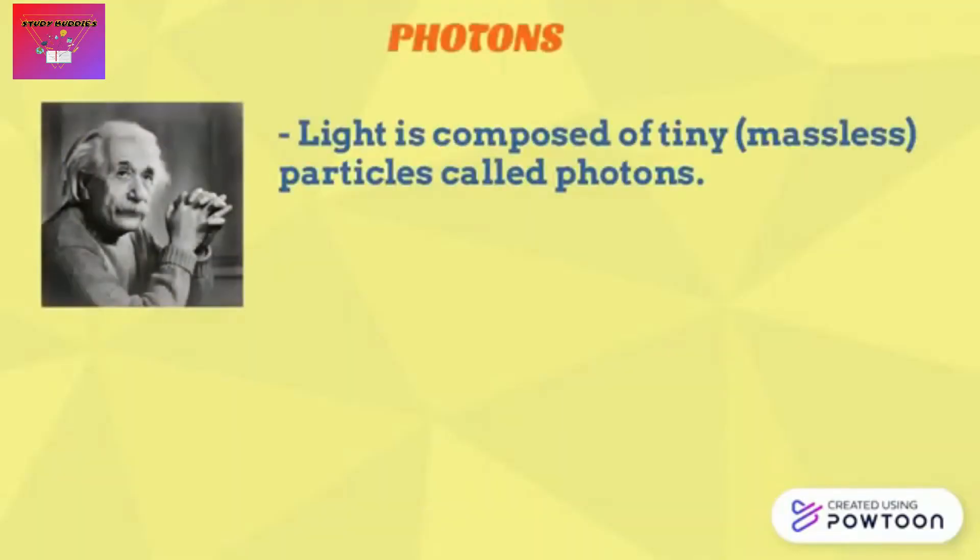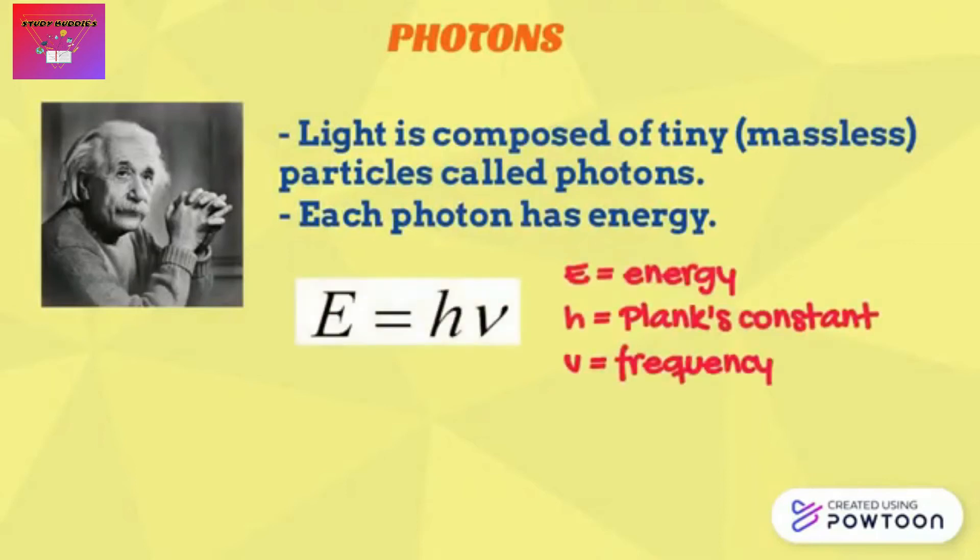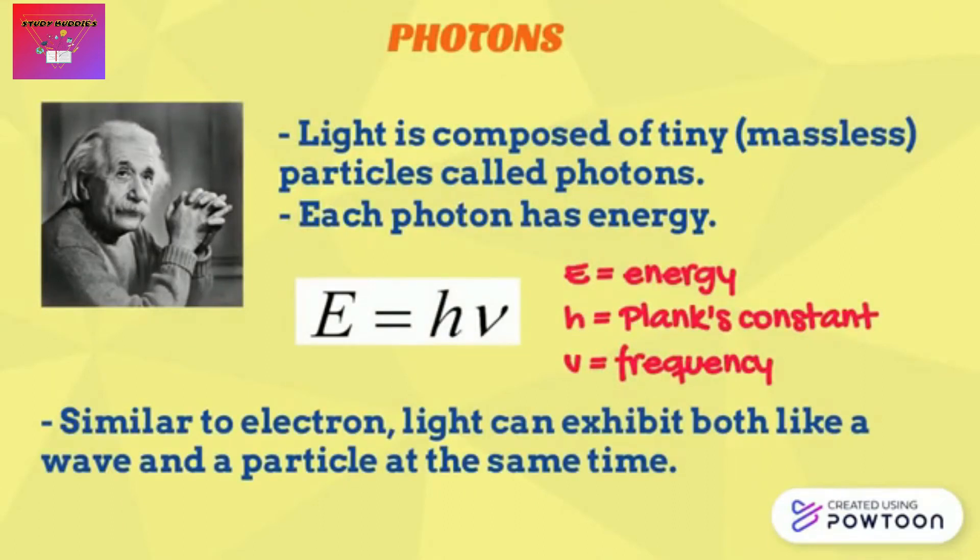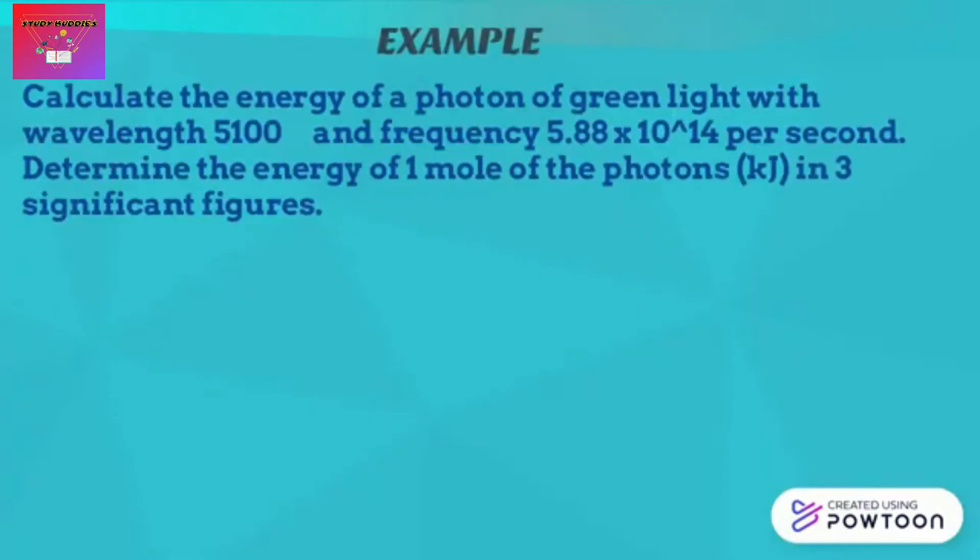Now let's move to the third topic, photons. Albert Einstein suggested that light is composed of tiny massless particles called photons, and each photon has energy. Einstein's photon is similar to Planck's energy quantum. A photon has energy given by the equation below. The energy of photon equals Planck's constant multiply with frequency. Similar to electrons, light can exhibit both like a wave and a particle at the same time.